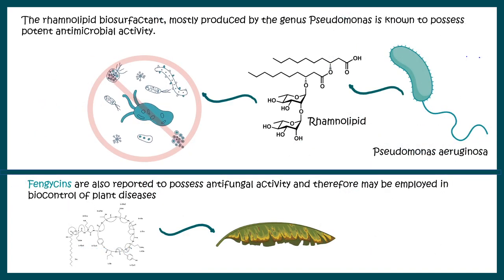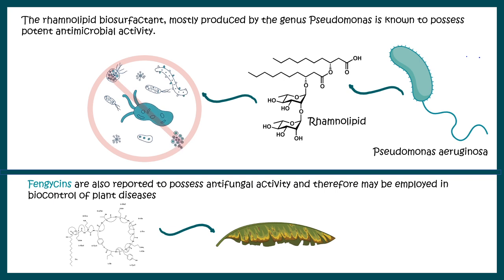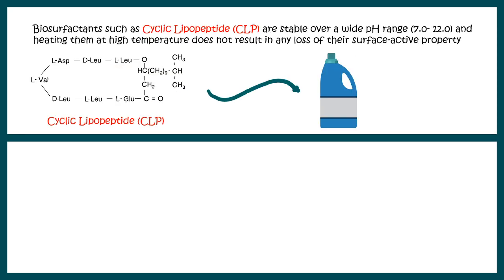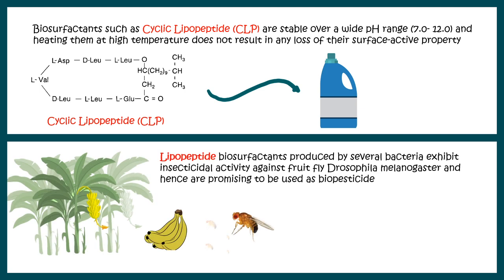For example, rhamnolipid has antimicrobial properties and is used to coat surfaces and prevent microbial biofilm formation. Another biosurfactant, fengicin, is used for its antifungal property — it can prevent fungal infection of crops and therefore works as a biopesticide. Cyclic lipopeptides (CLP) are used in oils to increase their efficiency, and lipopeptide biosurfactants are used in banana farms for their strong insect repellent activity, making them another example of biopesticides.